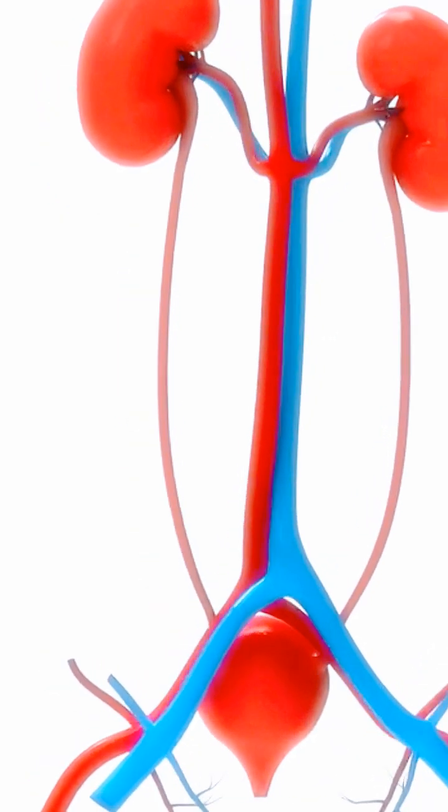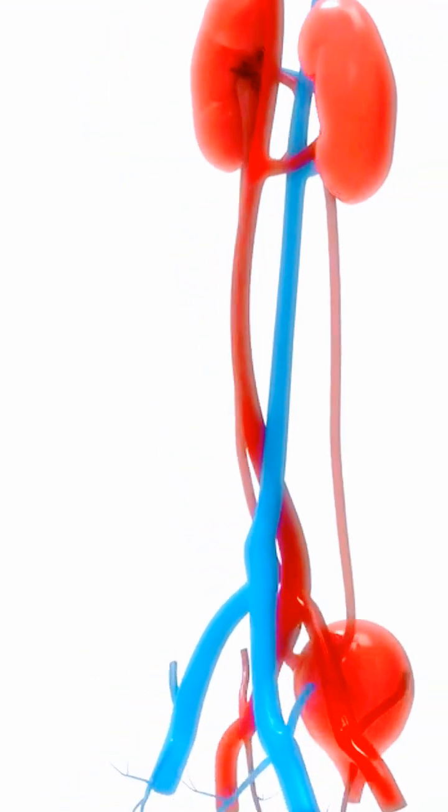There are two kidneys. This pair of purplish-brown organs is placed in the center of the back, below the ribs.